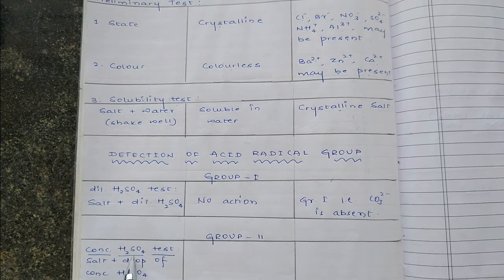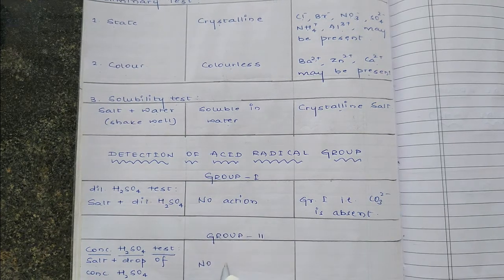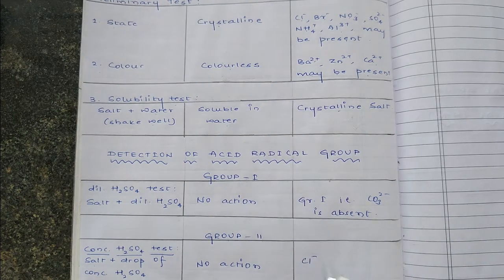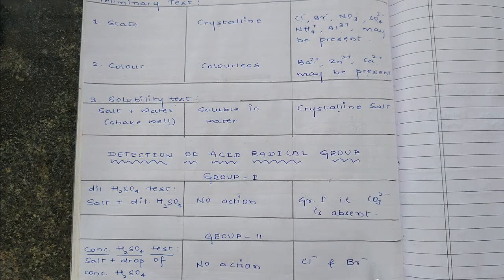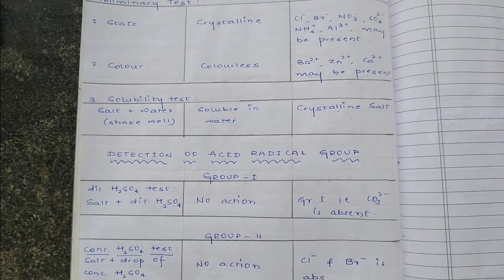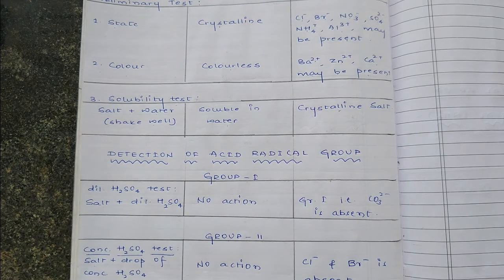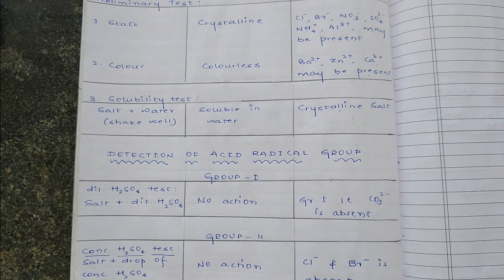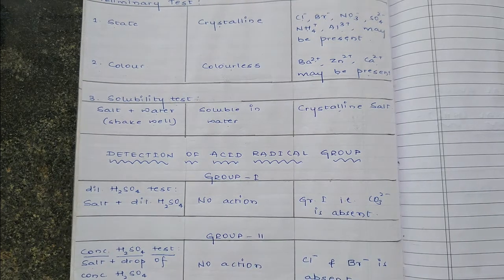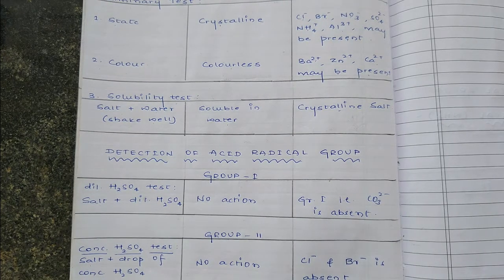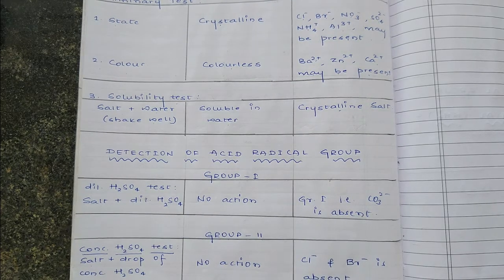Group two, concentrated sulphuric acid test: salt plus a drop of concentrated H₂SO₄ — observation: no action, which means chloride and bromide are absent. If there is no action, we add copper turnings and heat again — observation: no action once more. The inference is nitrate NO₃⁻ is absent. That is, group two is absent.